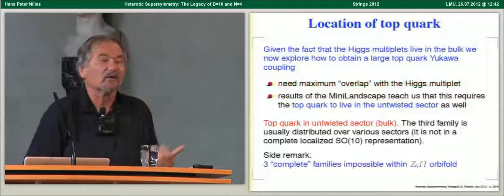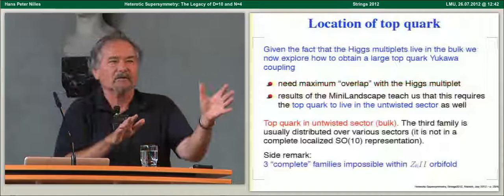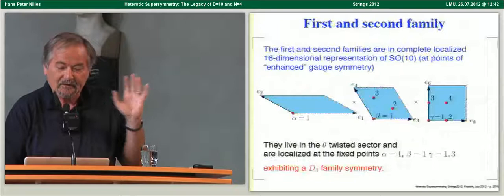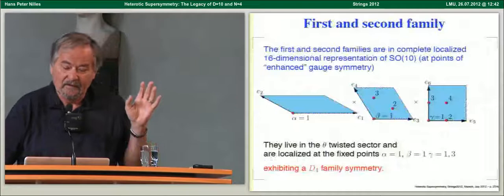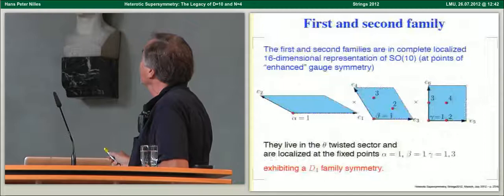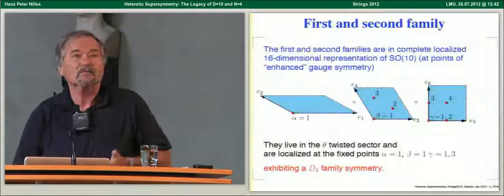The rest of the third family particles are at various places — the third family is like one where the kids have moved out, with only the top quark remaining in the bulk. The first and second families, on the other hand, live on fixed points — just in four dimensions. They sit at specific fixed points α₁, β₁, and γ=1 and γ=3. We have the full family there, with a non-abelian discrete family symmetry D4, where these two families form a doublet. This is good for the flavor problem.